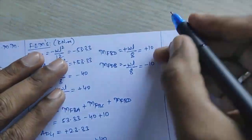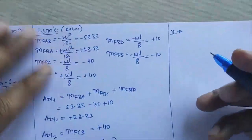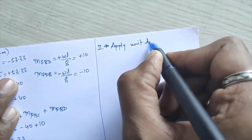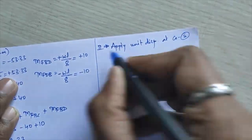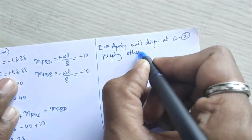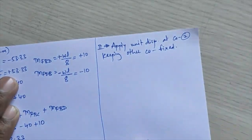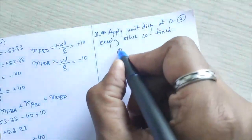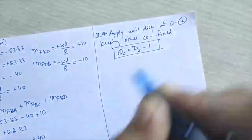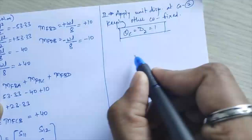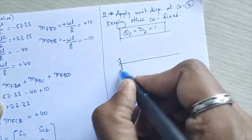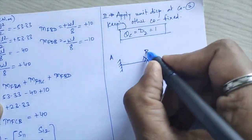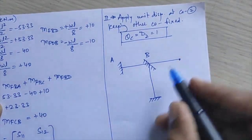In Roman II, we apply unit displacement at coordinate 2 while keeping other coordinates fixed. That means theta C = D2 = 1 at joint C. Joints A, D, and B remain fixed while joint C is freed. We mark the stiffness coefficients at the first and second coordinates.